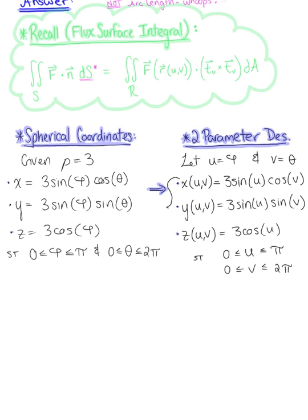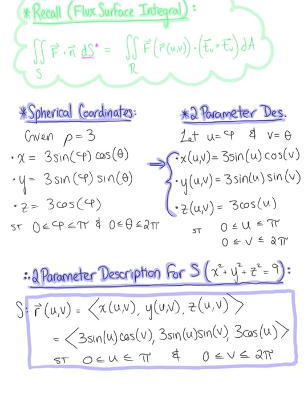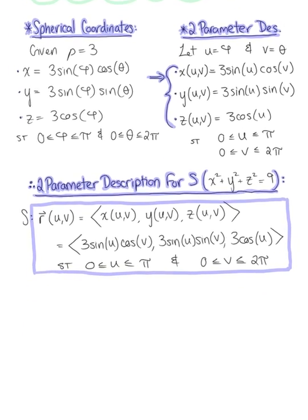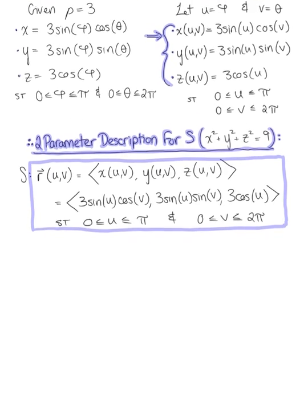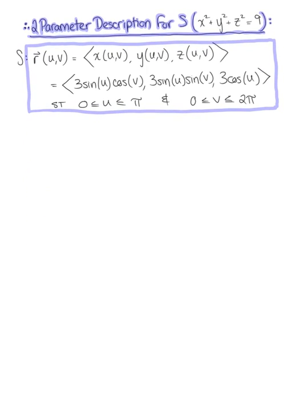With the two-parameter description, x(u,v) = 3 sin(u) cos(v), y(u,v) = 3 sin(u) sin(v), and z(u,v) = 3 cos(u), where u ∈ [0, π] and v ∈ [0, 2π]. This is what we'll use as the components of the parametrized surface. Now that we officially have this two-parameter description for our sphere centered at the origin with radius 3, we're ready to set up the surface integral and compute the normal vector.